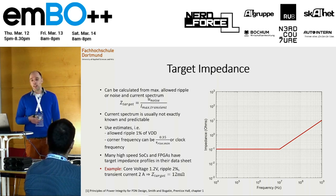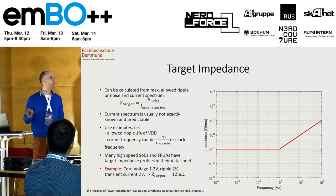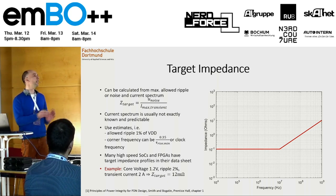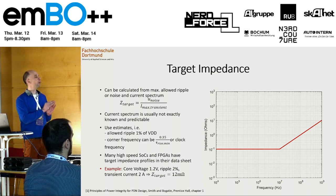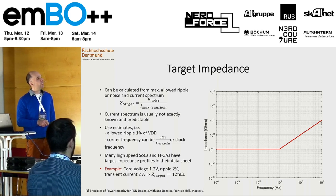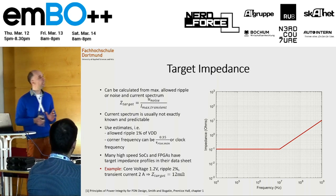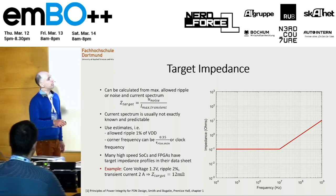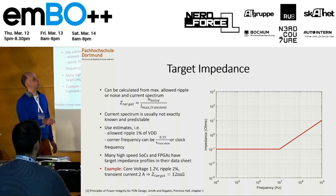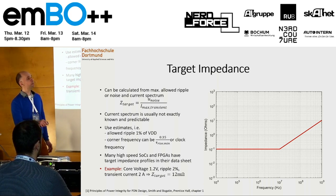What you can do is just use estimates for your current — use the worst-case current and say this is the maximum current for every frequency. Then you get this flat line using this formula. And the goal is now to design your power distribution network in a way such that its impedance is always below this line.